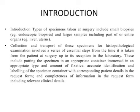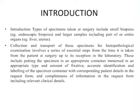Introduction includes the types of specimens taken at surgery. These include small biopsies, for example endoscopic biopsies, and larger samples including part of or entire organs. Endoscopy uses a tool to collect a very small sample — that is called a small biopsy. If we have a whole organ, that is another type. We will use our fixatives according to the size of our biopsies.